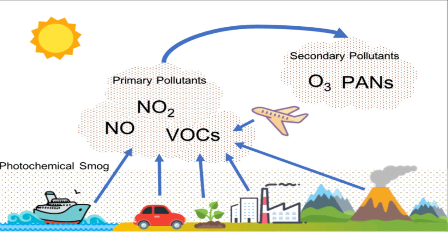Now we will see how photochemical smog is formed. Hydrocarbons and oxides of nitrogen react in the presence of sunlight to produce photochemical smog, which contains ozone (O3), hydrogen peroxides, organic peroxides, organic hydroperoxides, and peroxy acetyl nitrate. Various reactions take place in the formation of photochemical smog.